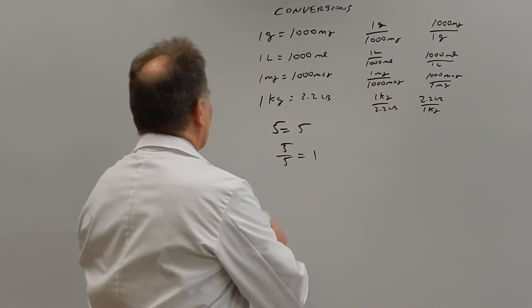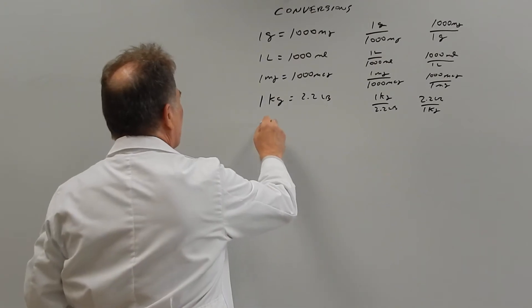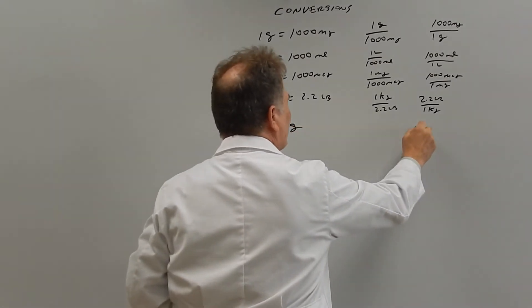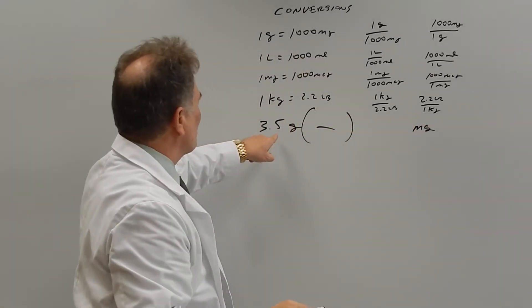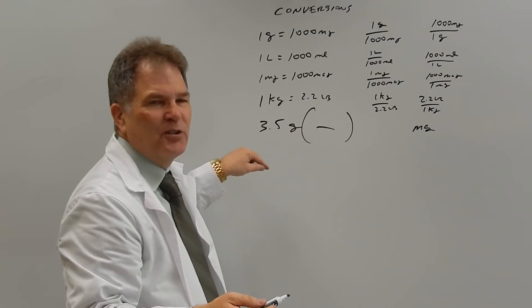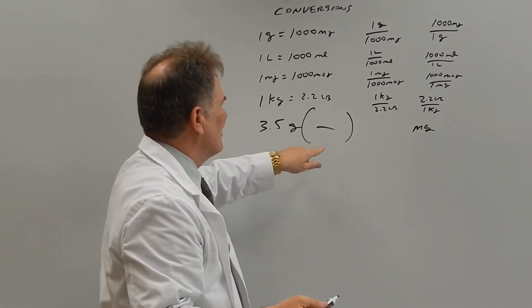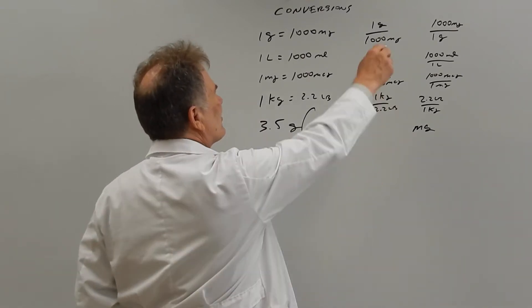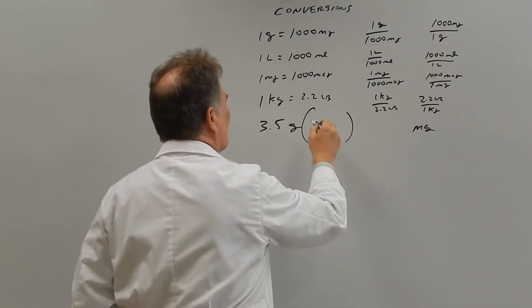So let's just do a couple. Let's say I want to change 5.5 grams into milligrams. So we're going to multiply 3.5 grams times a form of 1 so that the grams cancel out and the units of the milligram are left over. So we look at our little chart here. We see that we have 1,000 milligrams over 1 gram.